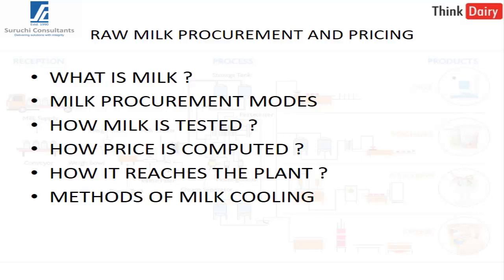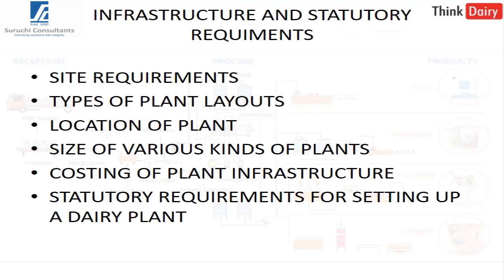Once we are done with procurement, we talk about infrastructure — what are the site requirements for where you want to set up the plant, most importantly where you are going to drain your effluent, and what are the different kinds of plant layouts based on process layouts and location.